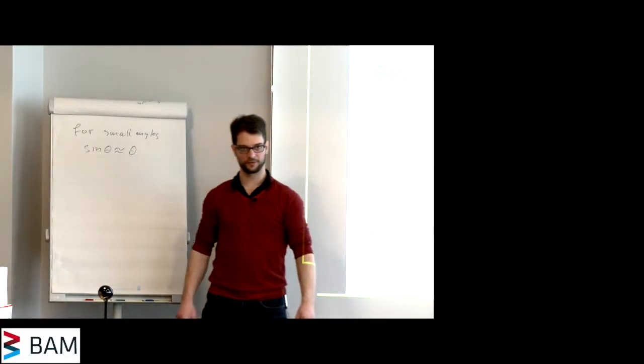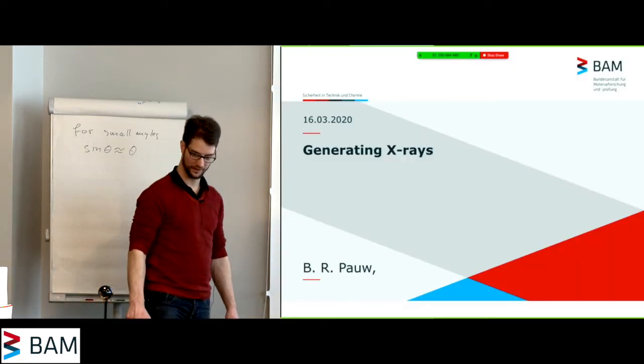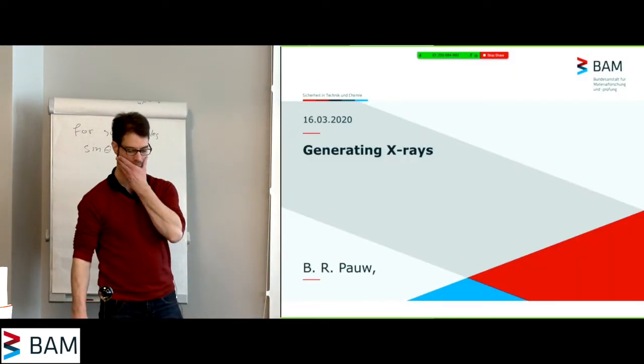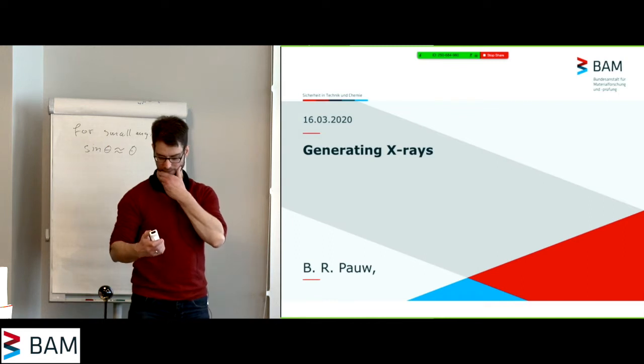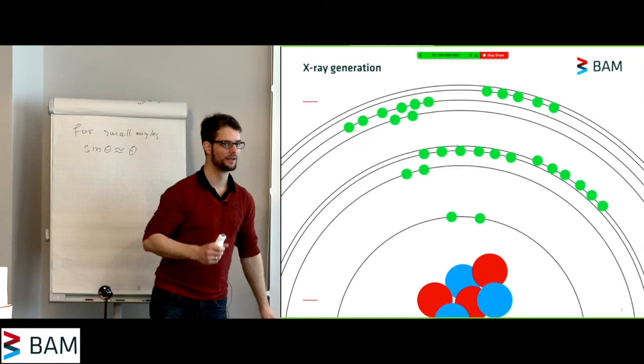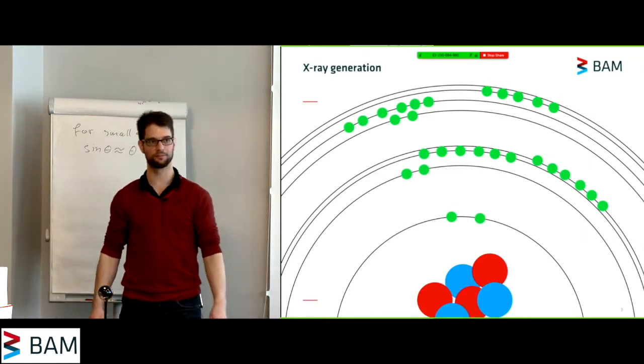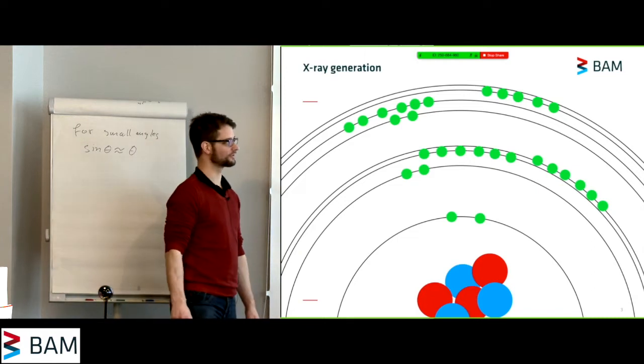So, I would like to explain to you where the x-rays in our lab are coming from. In the laboratory, we generate our x-rays mostly by means of shooting electrons at metals.